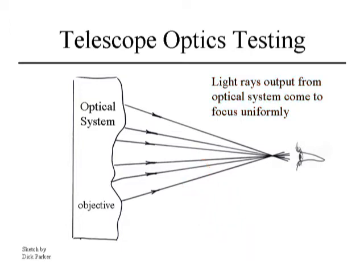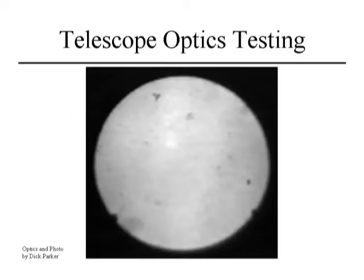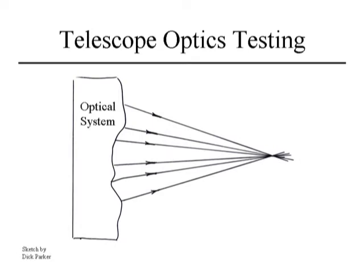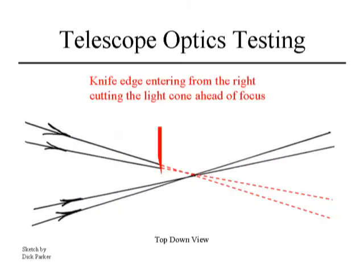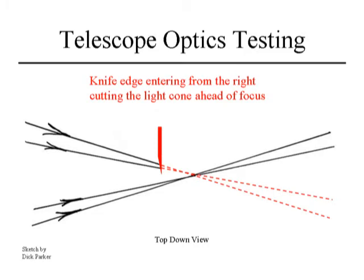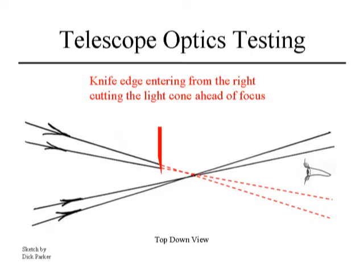For most telescopes the aperture is round or circular. If all rays of light come to a focus and you put your eye there, you see a uniformly lit-up disk. Now, if I take a knife edge and introduce it into the beam — consider this a top view with the knife coming from the right — as I start cutting that bundle of light, I progressively cut the beam and I see a shadow coming across the aperture, like a curtain sweeping across the surface. If I withdraw the knife, it lightens up again.